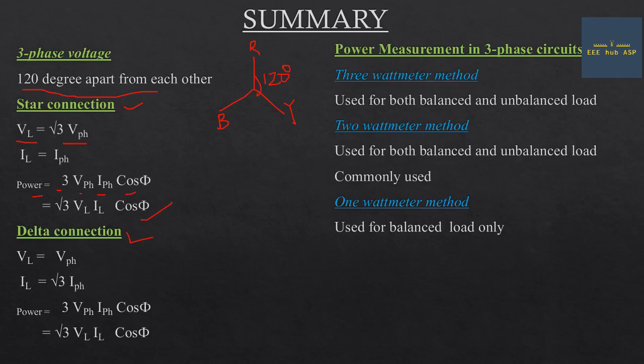For delta connection: line voltage equals phase voltage, and line current equals root 3 into phase current. Power equals root 3 into V_L into I_L into cos φ.